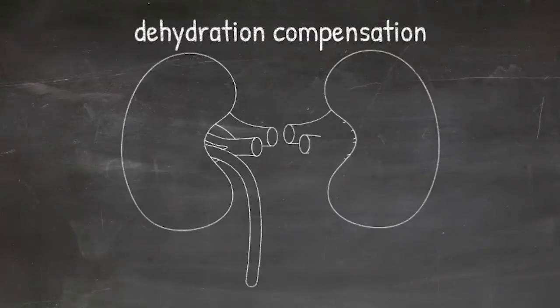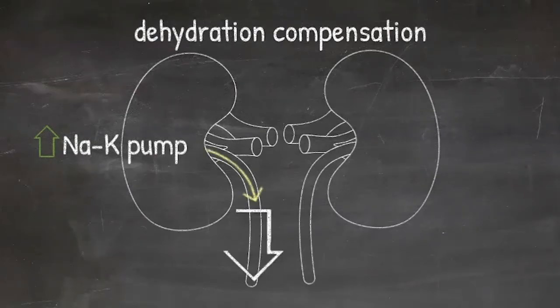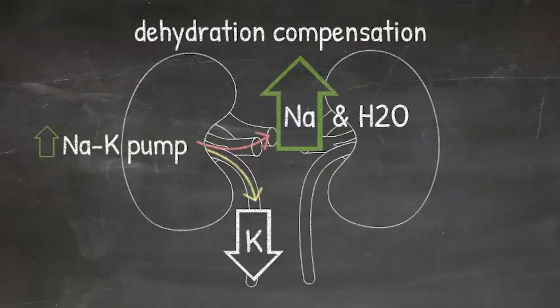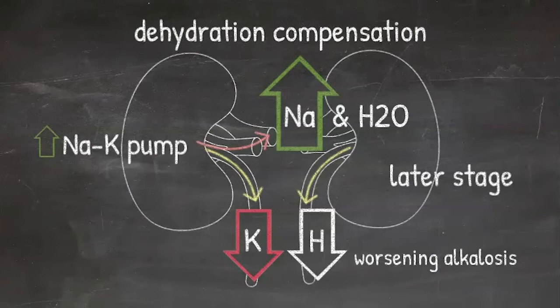Then the kidneys try to compensate for dehydration, and they increase the activity of the sodium-potassium pump in an attempt to retain fluid. This leads to urinary excretion of potassium to preserve sodium and water. Eventually, this leads to hypokalemia, and in later stages, excretion of protons leads to paradoxical aciduria, which further worsens metabolic alkalosis.